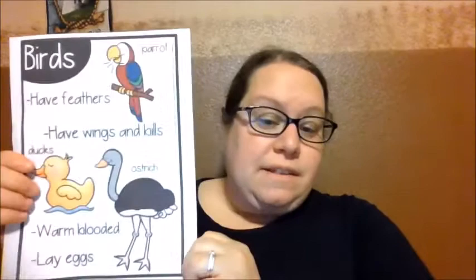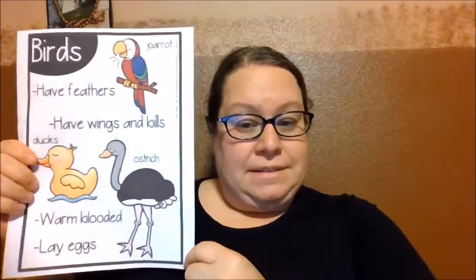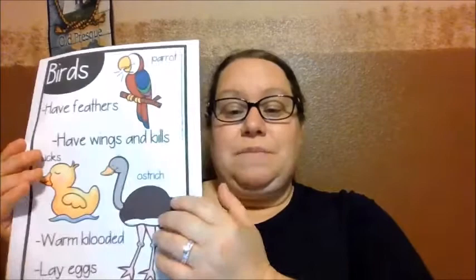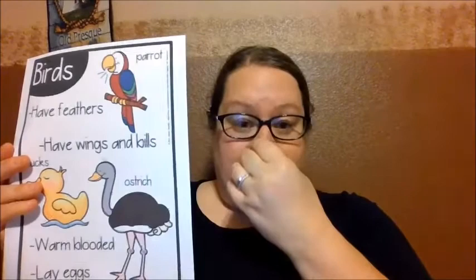Birds have feathers and wings, but that doesn't mean they fly. An ostrich doesn't fly — I've seen an ostrich run. Flamingos don't fly either; they stand on their long skinny pink legs. So birds don't necessarily have to be flying birds. It just means they have feathers, wings, and bills. Birds have feathers and wings and lay eggs.